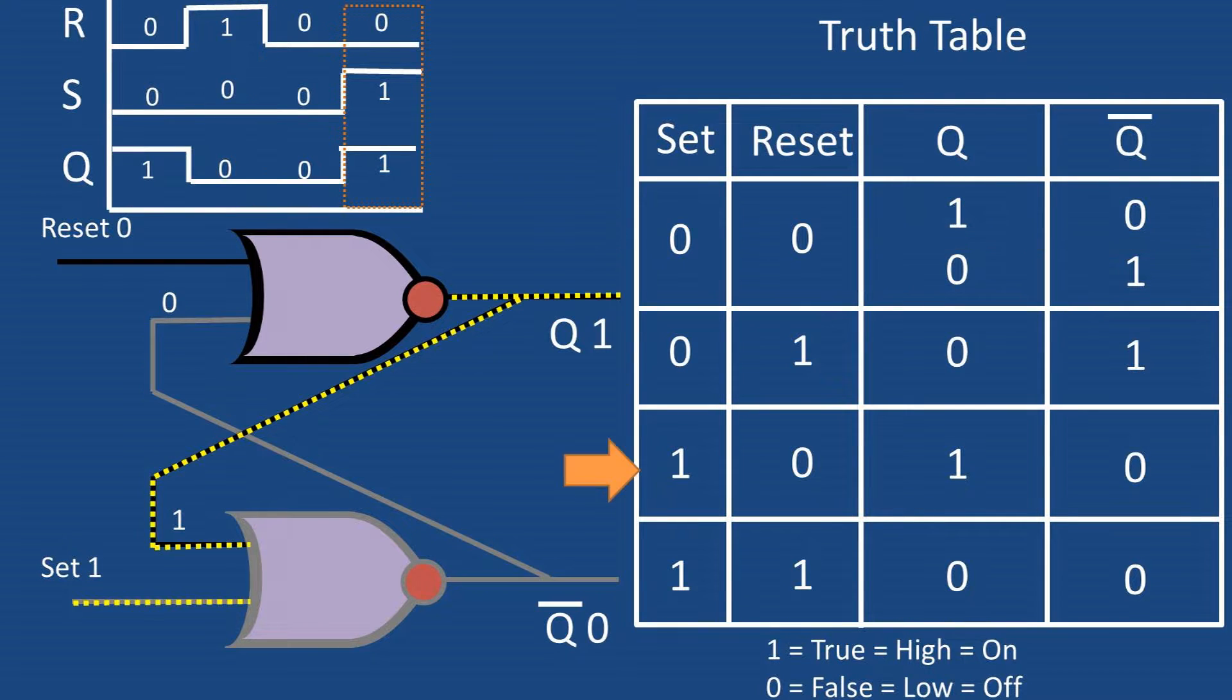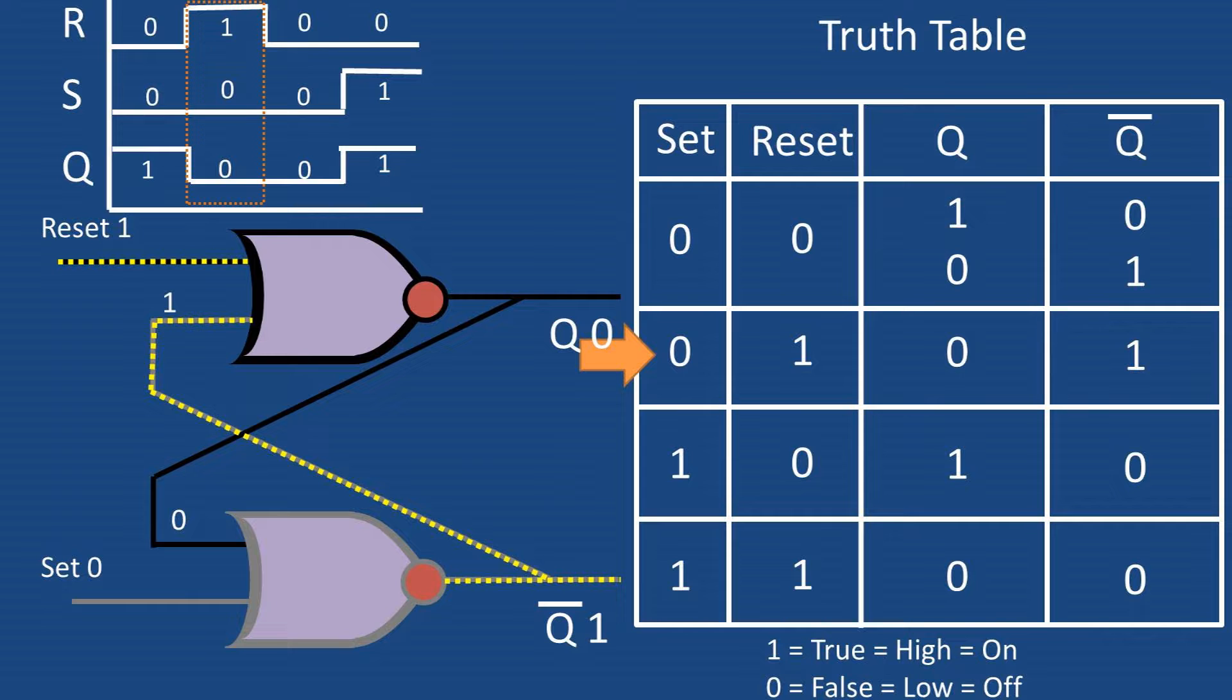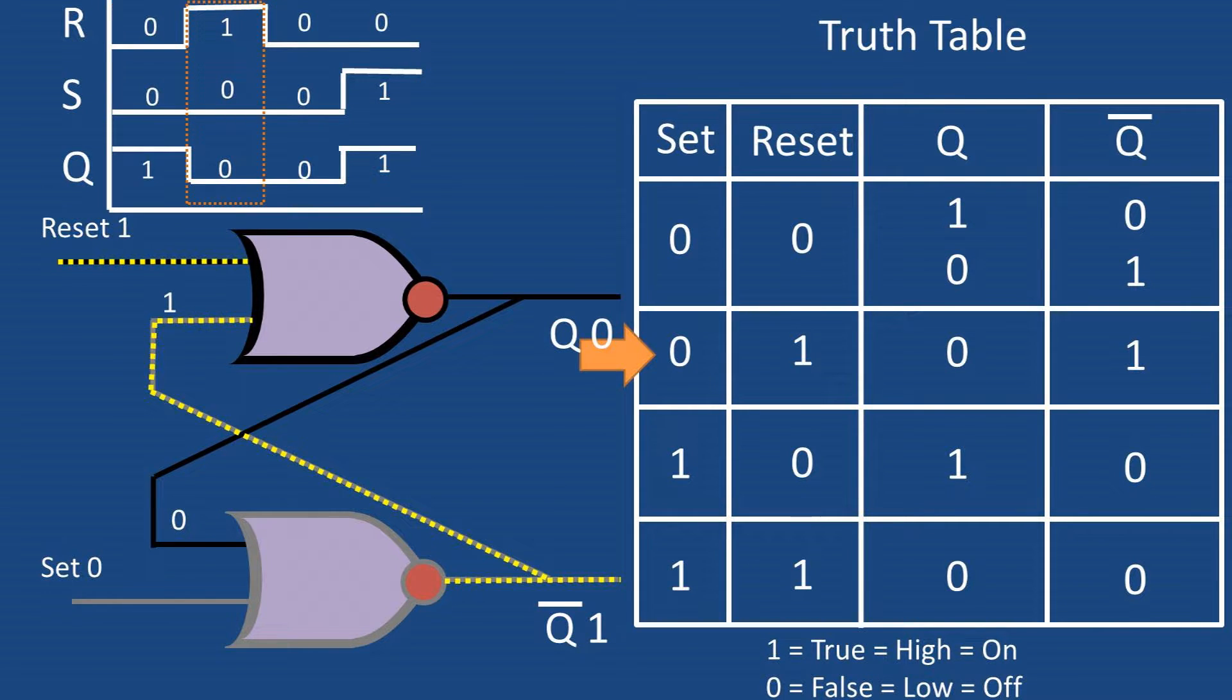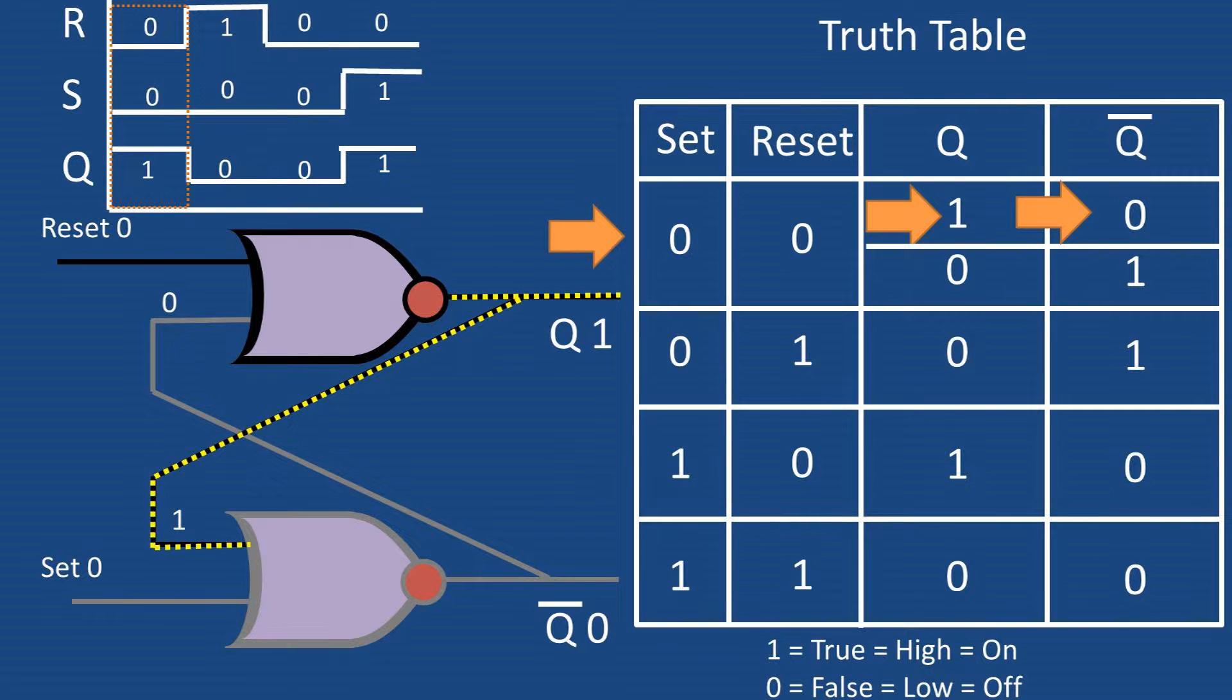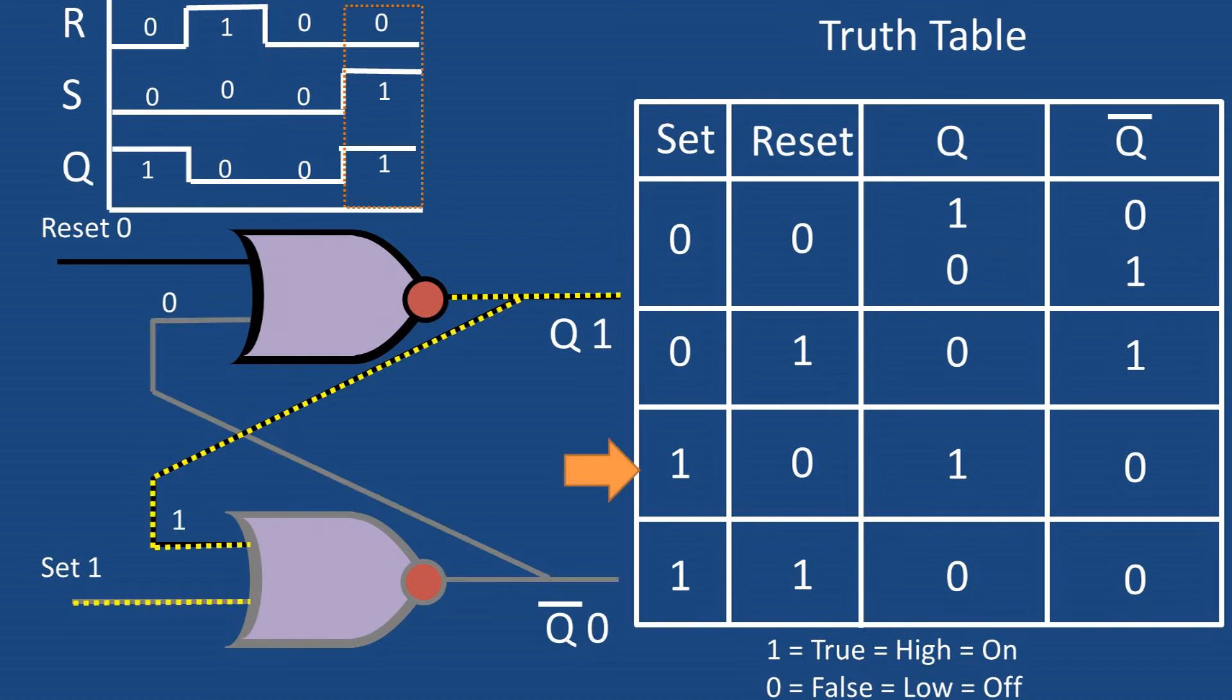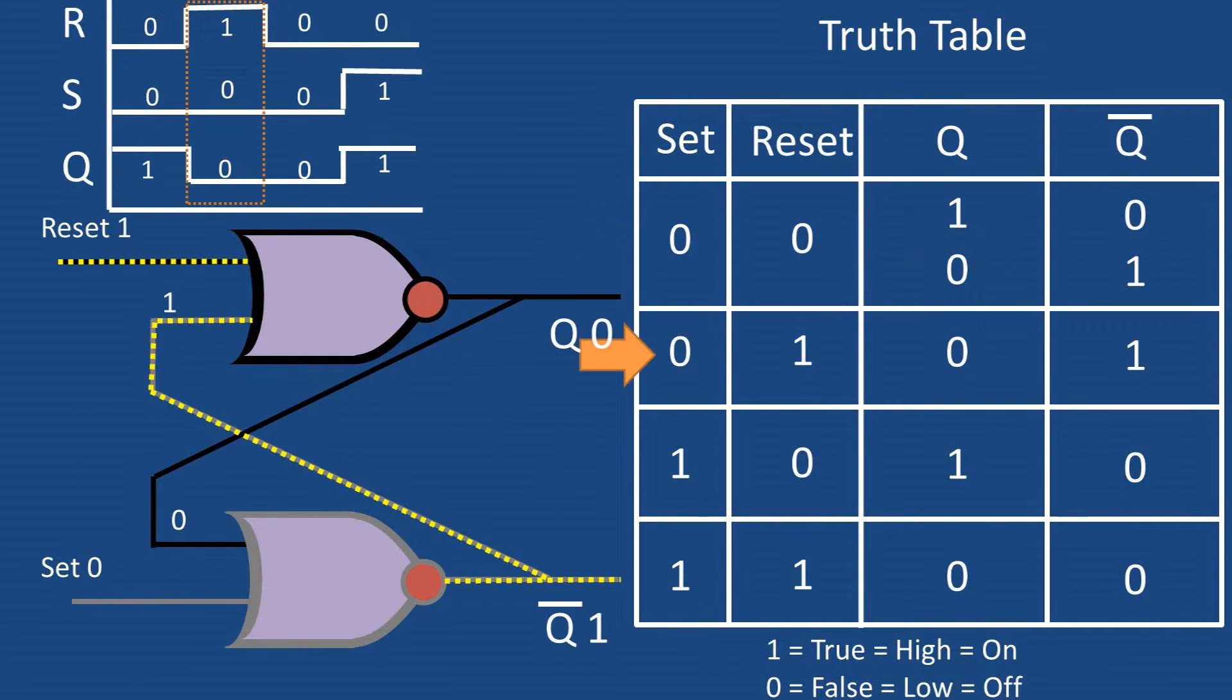This consists of two NOR gates with one of the NOR gates inputs being a reset value and the other the output from the other NOR gate. The other NOR gate has an input value of a set value and the output from the other gate as the other input value.